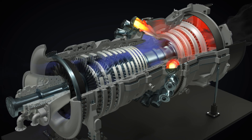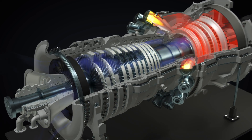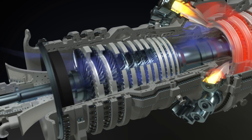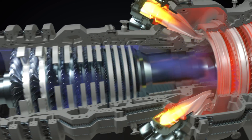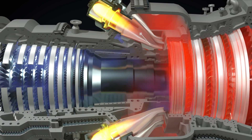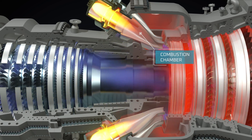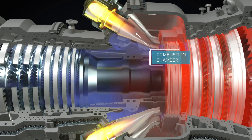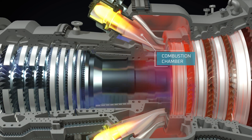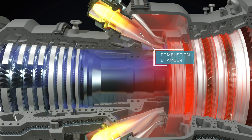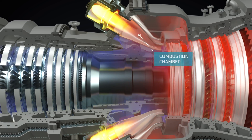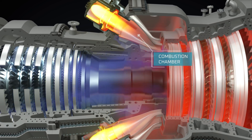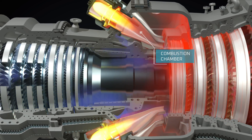The compressed air is then directed to the combustion chambers, where fuel — usually natural gas, diesel, or aviation fuel — is injected and ignited. The burning fuel-air mixture produces high-temperature, high-pressure gases.